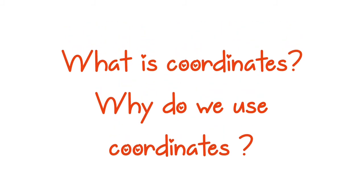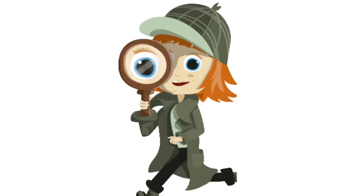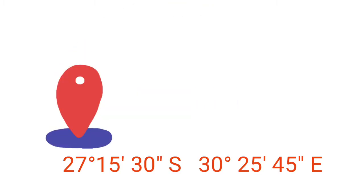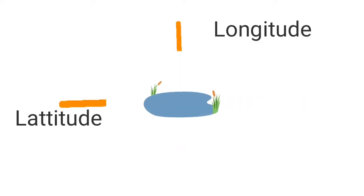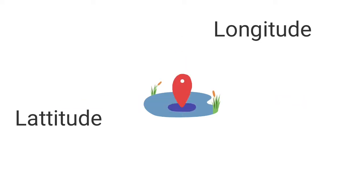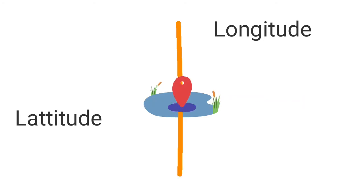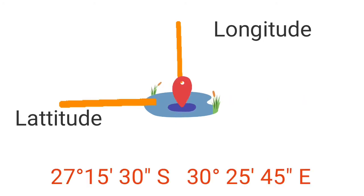So what are coordinates? Why do we use coordinates? A coordinate system is a way in which geographers find the exact location of a place or a feature on the earth's surface. This means that coordinates is where lines of latitude and lines of longitude meet to give us a specific location of a physical or man-made feature in degrees, minutes and seconds.